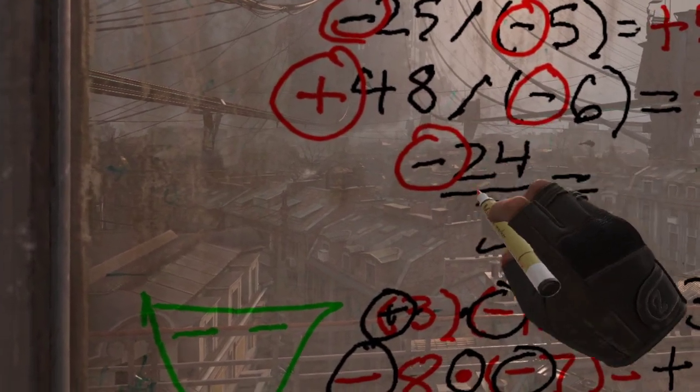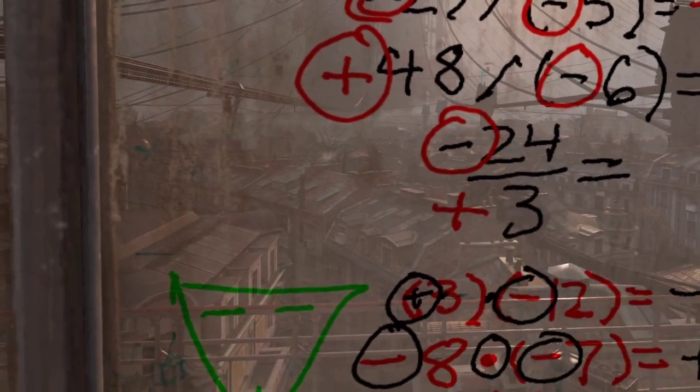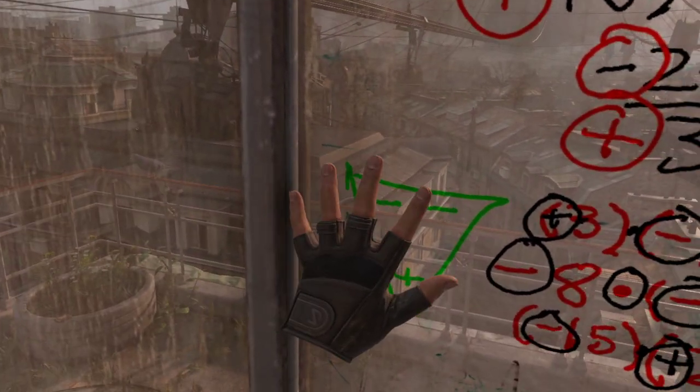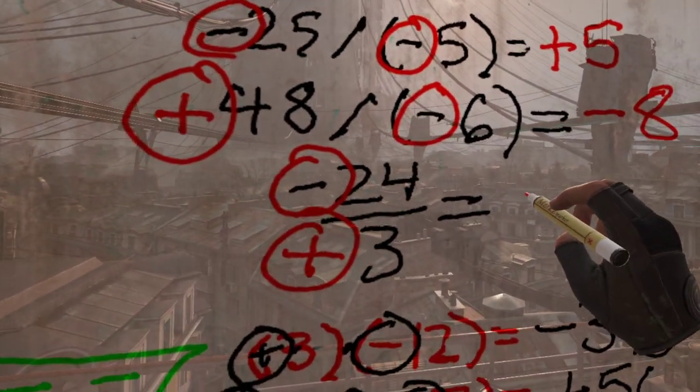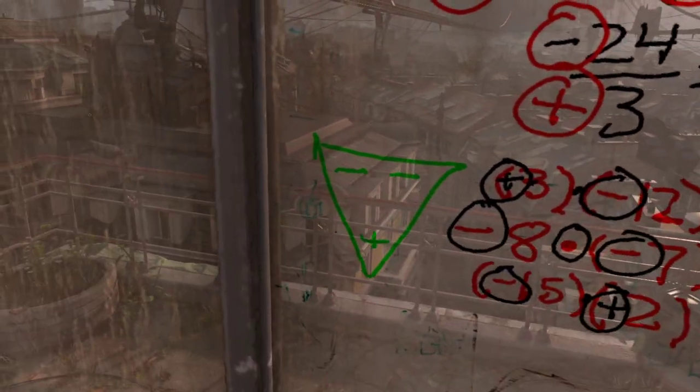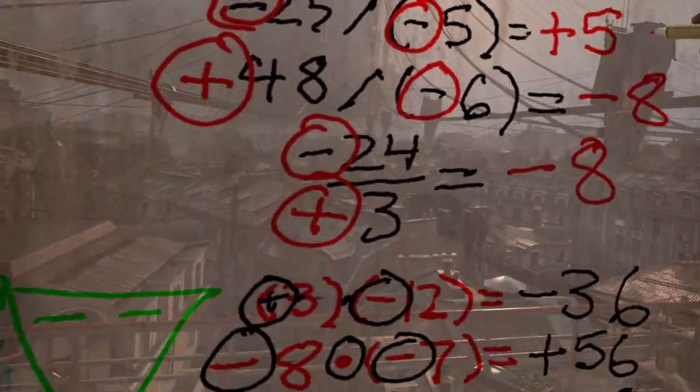Negative 24 divided by 3 is 8, so that's also negative 8. Alright, and that's it.